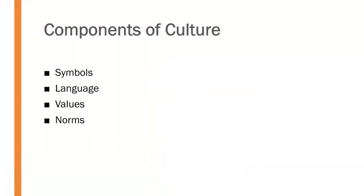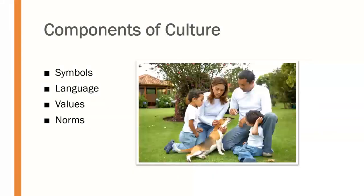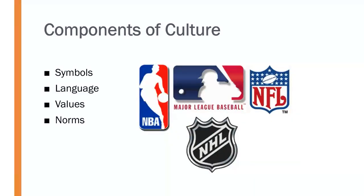Finally, what are the norms in a culture — the way that things are usually done? In the United States we drive on the right side of the road, whereas in other cultures they drive on the left. The norm here is mom, dad, 2.5 kids, and a big lawn, as opposed to a larger family in an apartment that may be different in other parts of the world. In the United States we also have the norms of our major sporting leagues — the NBA, major league baseball, the NFL, and NHL — whereas in the rest of the world, soccer is the primary sport.